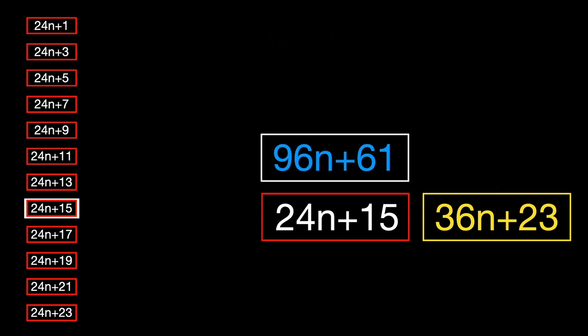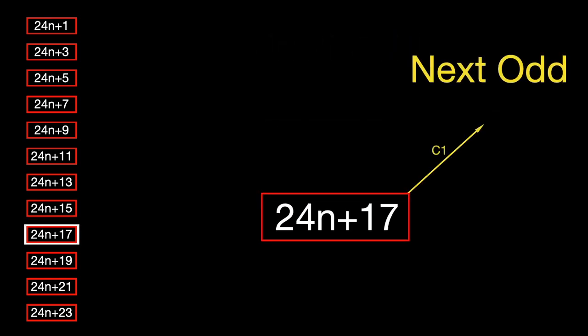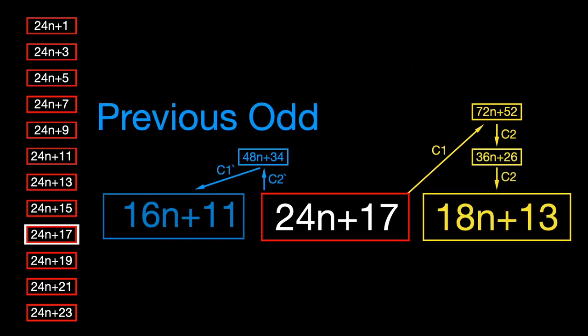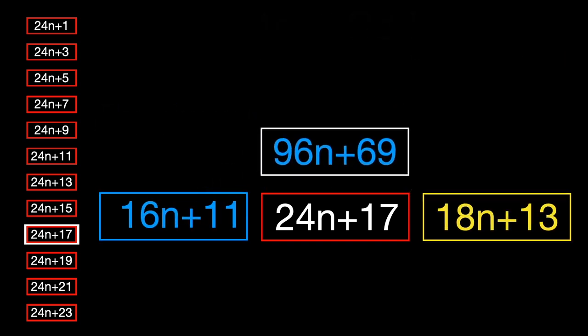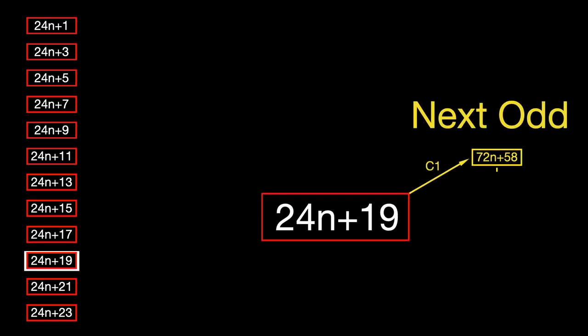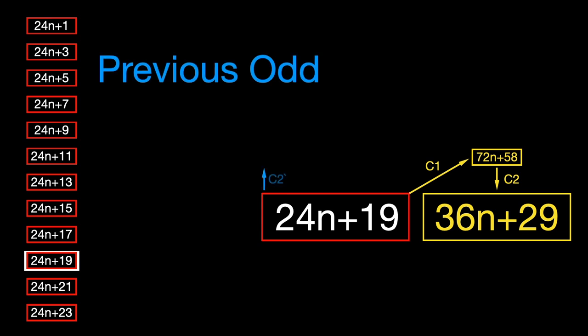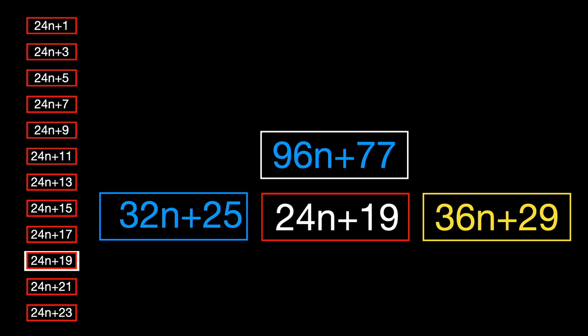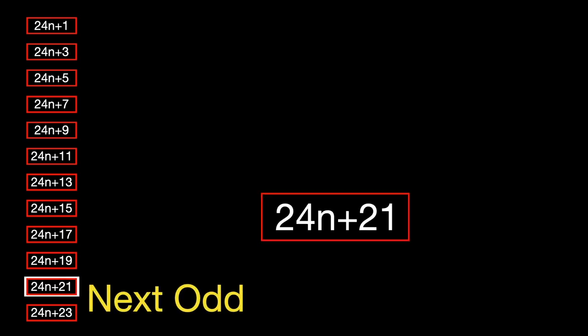You might do a thought experiment of what it would take to have an odd number not be present in the Collatz tree. Removal of any odd number from the tree violates the surrounding predecessor and successor rules because the surrounding odd numbers would continue to be linked to the value and the position of the removed value based on the three rules C1, C2, and C3.